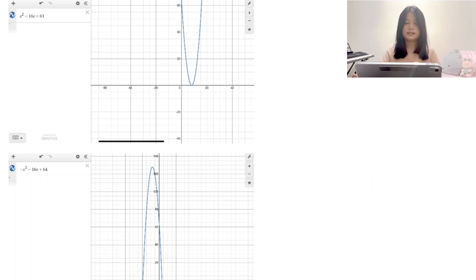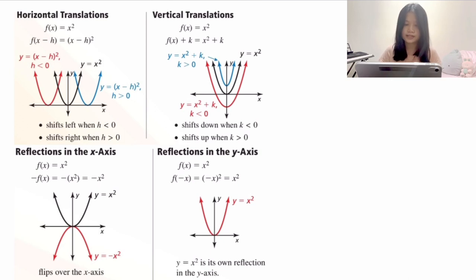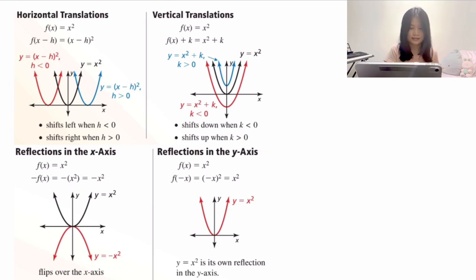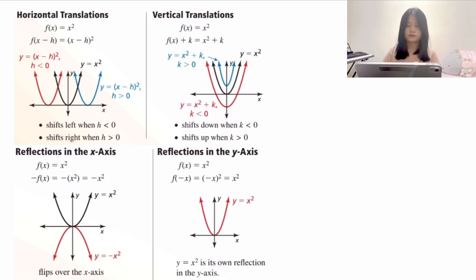To wrap it all up: the graph shifts left when h is less than zero and right when h is greater than zero for horizontal translations. For vertical translations, it shifts down when k is less than zero and up when k is greater than zero. For x-axis reflection, add a negative in front. For y-axis reflection of x squared, you cannot see a difference because y=x² is its own reflection in the y-axis.